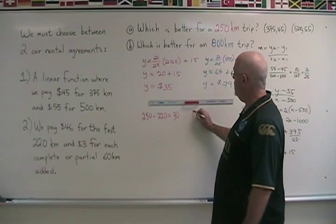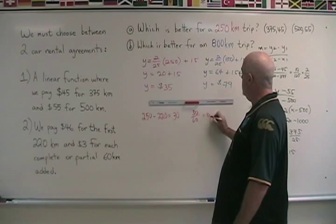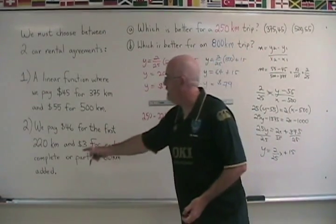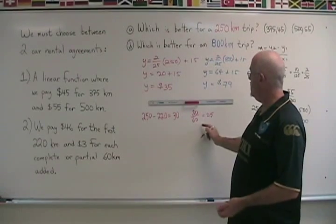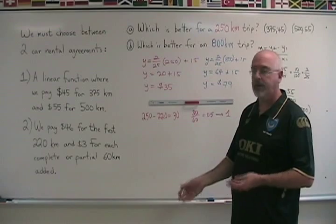But if we take our 30 and we divide it by the 60 kilometers, we get 0.5, and we have to round that up because it is for each complete or partial. So this is partial, and it would round up to be 1 extra 60 kilometers added.